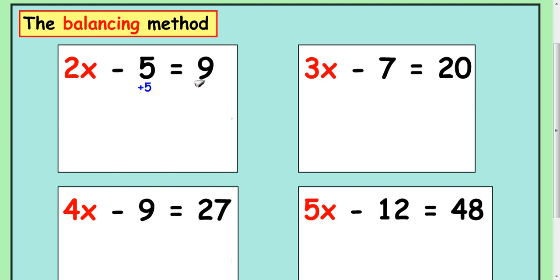And you do exactly the same to the other side. Because we're adding 5 pieces to one side to keep the scales balanced, you add 5 to the other side. So 2x is equal to 9 plus 5 is 14. And then divide by 2 to get 7.